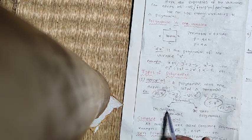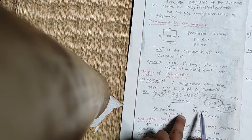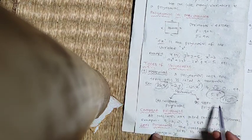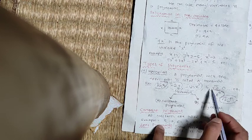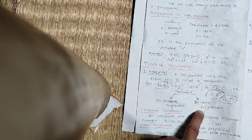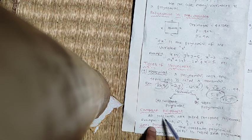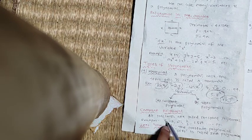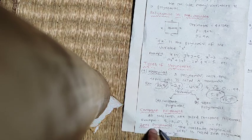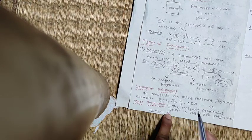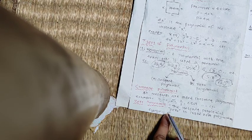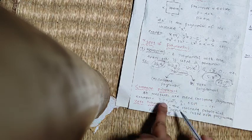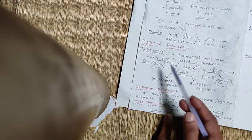This is the constant polynomial. The constant polynomial means 5 root 3, any constant number. But the 0 polynomial means only 0. All constants are called constant polynomial. The 0 polynomial means 0, only 0. The number 0 is called 0 polynomial. So the constant polynomial is also a monomial. The 0 polynomial is also a monomial.